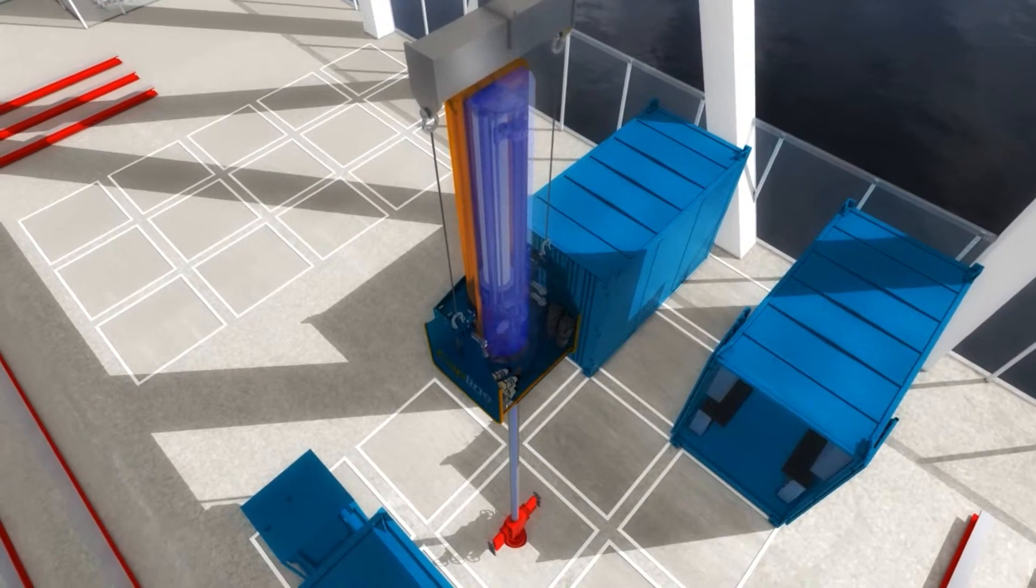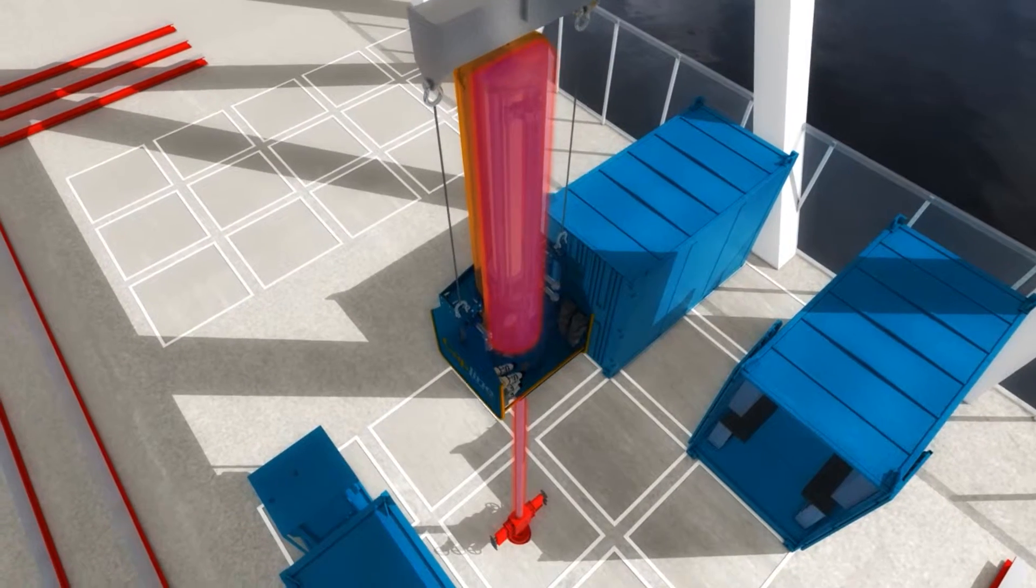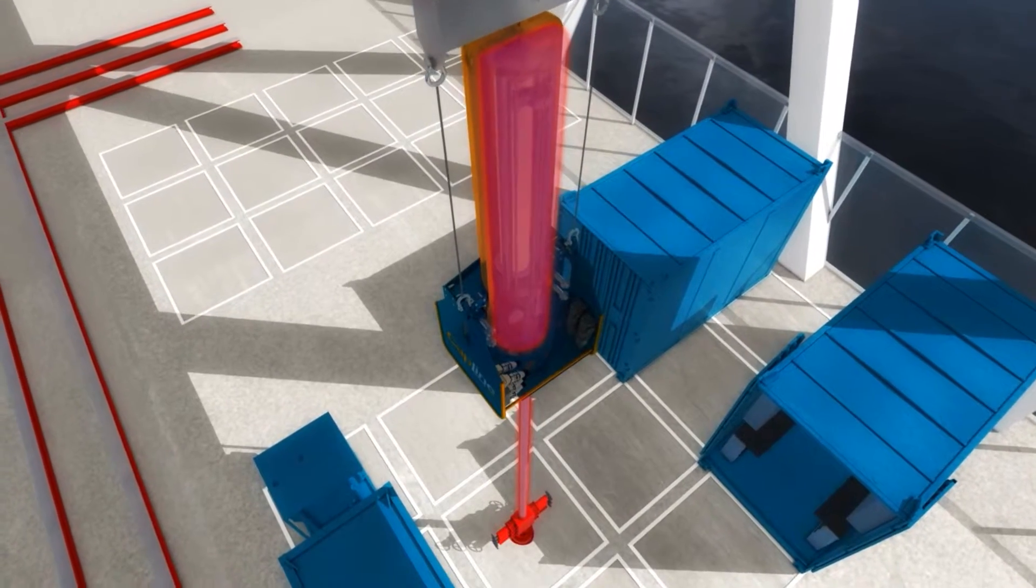The pressure vessel connects to the top of the lubricator, superseding the stuffing box or grease injection head.